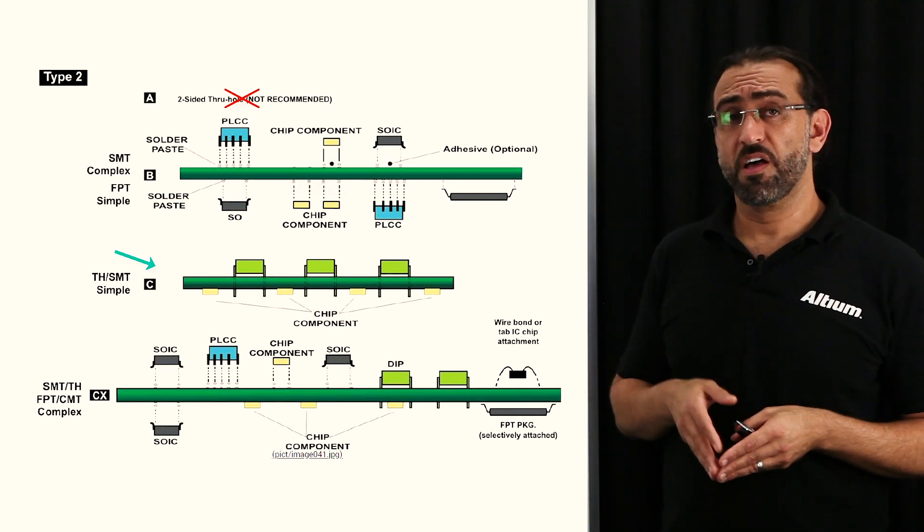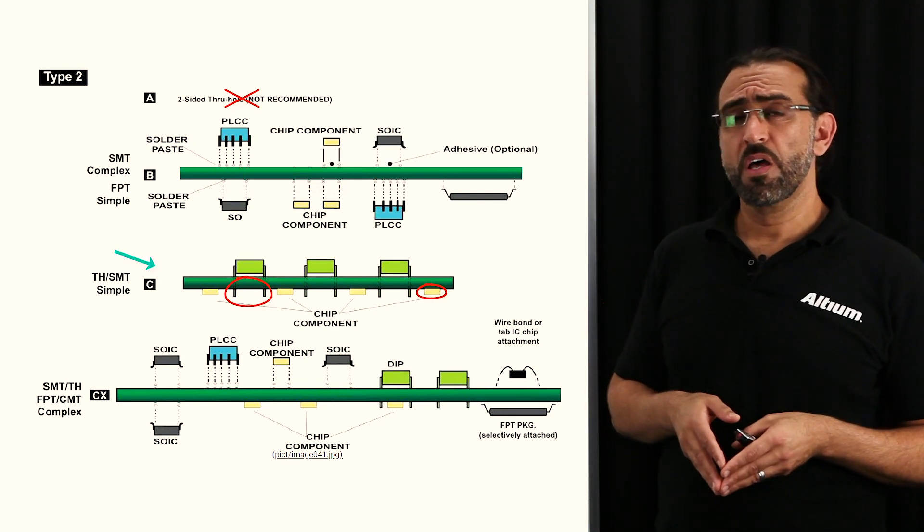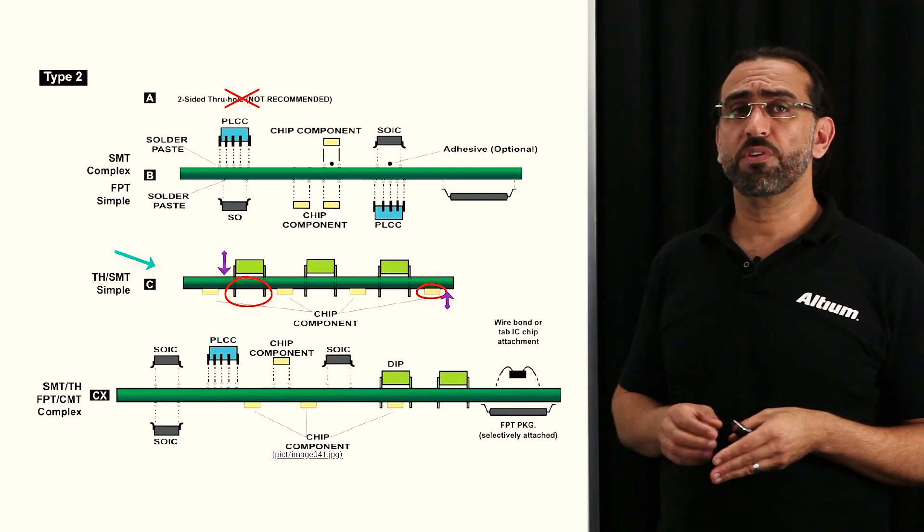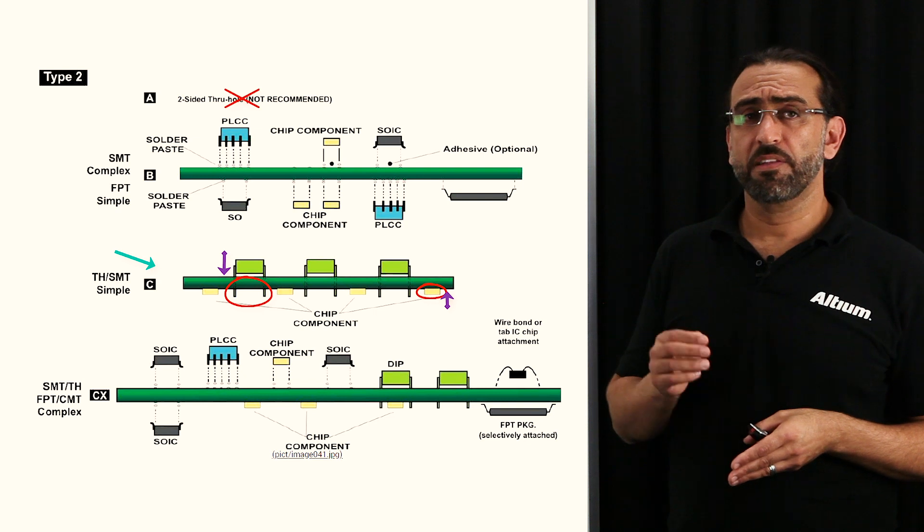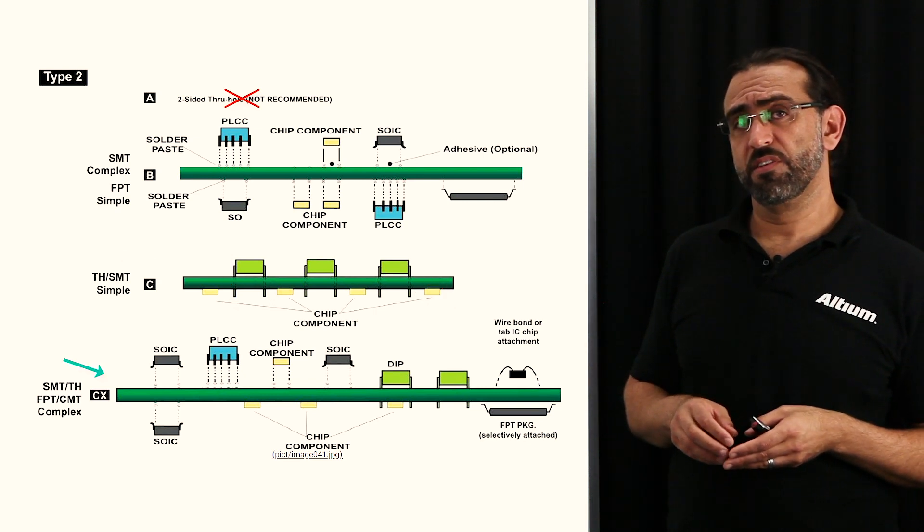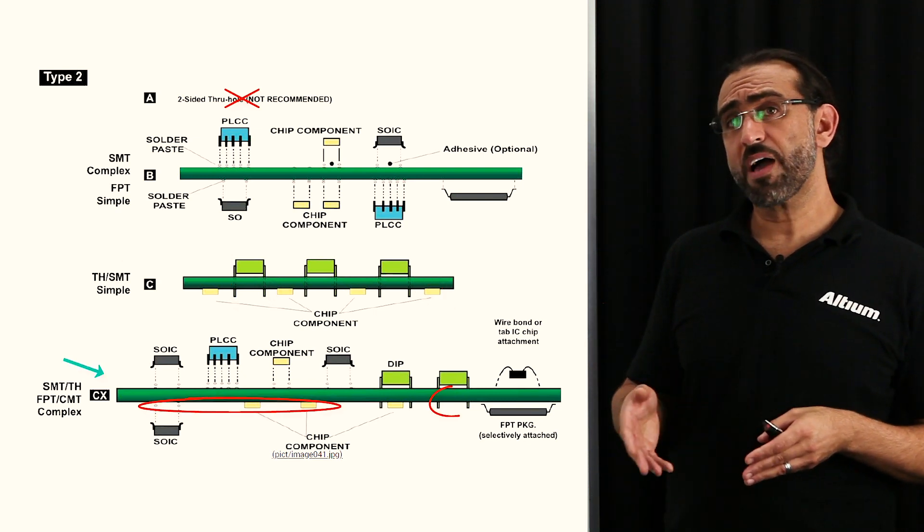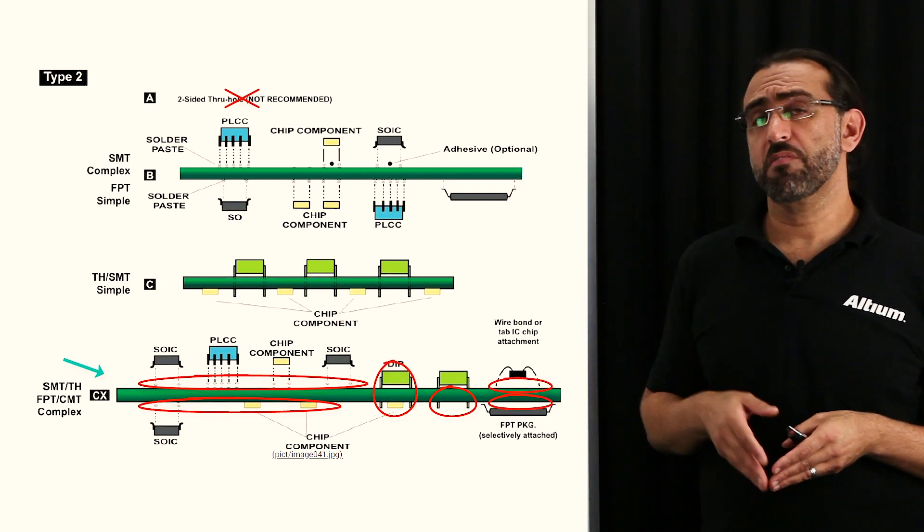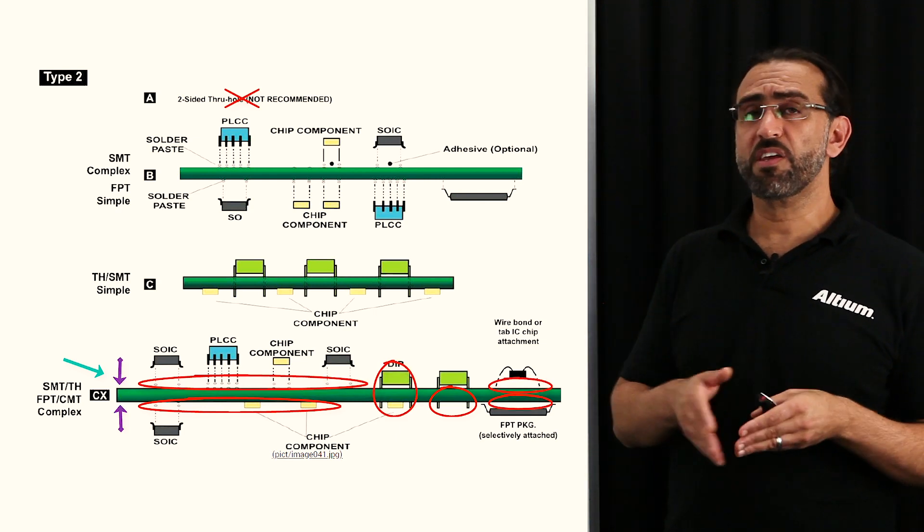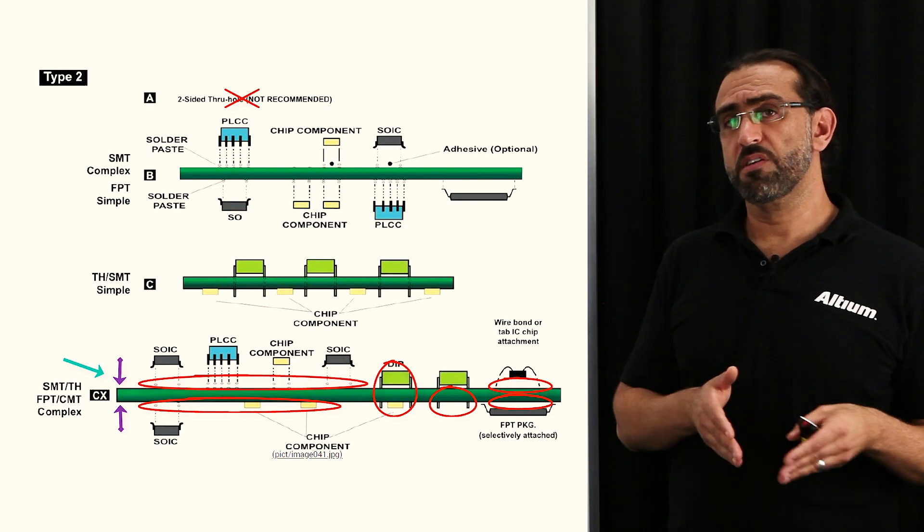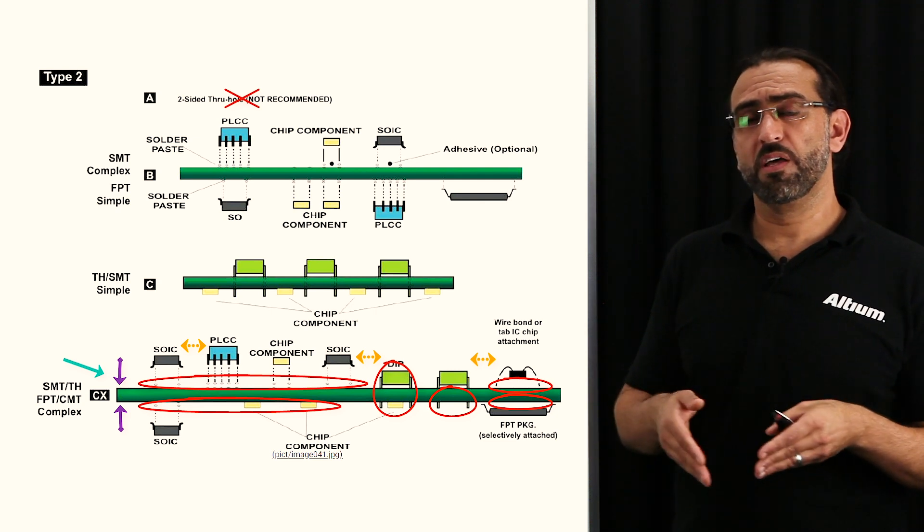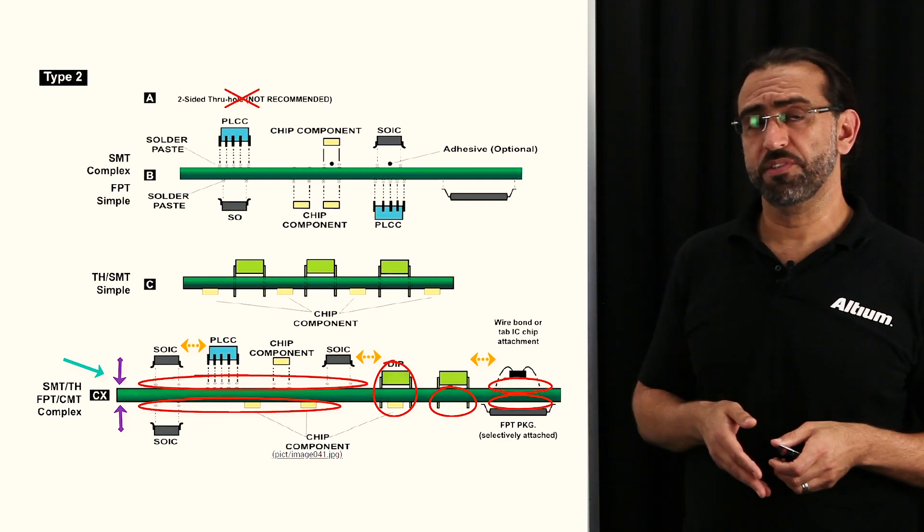C here has both through hole and surface mount, with the through hole components on top and chip components on the bottom side. And the last one here, labeled CX, is a bit more complex with both types of component technologies. But as you can see with the surface mount on both sides of the PCB, and you can see how some of the components need to be spaced. There's some space in between them, especially when it comes to through hole and other surface mount components.